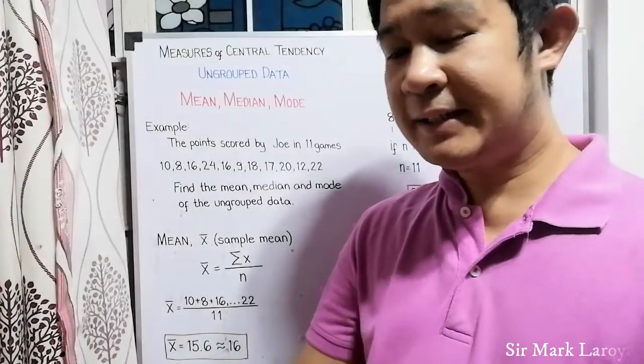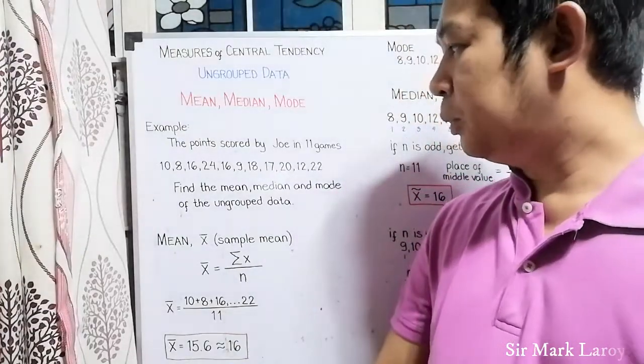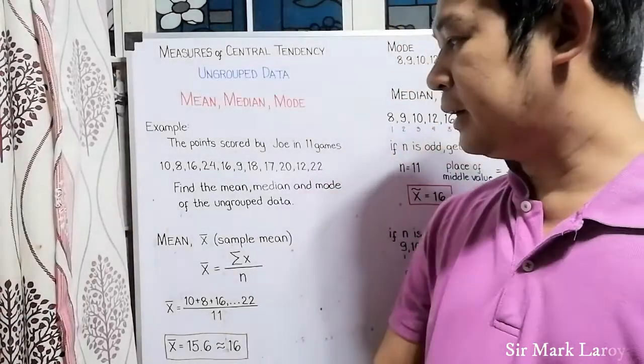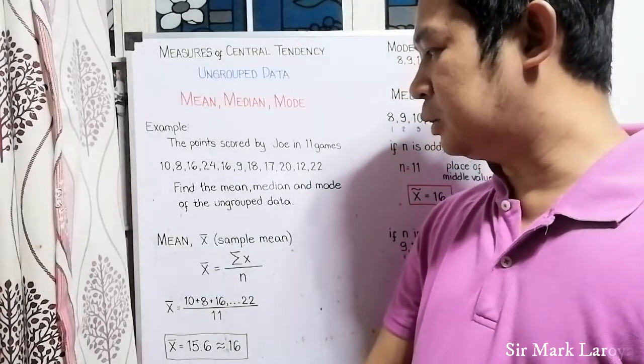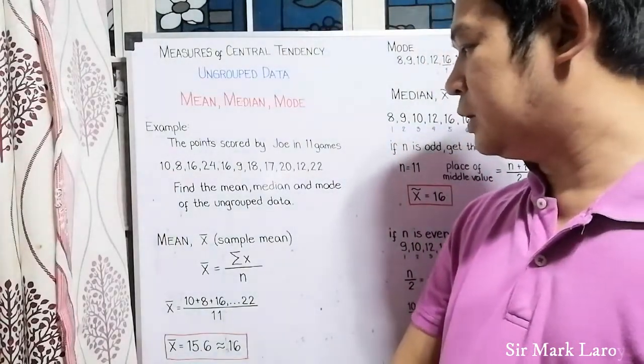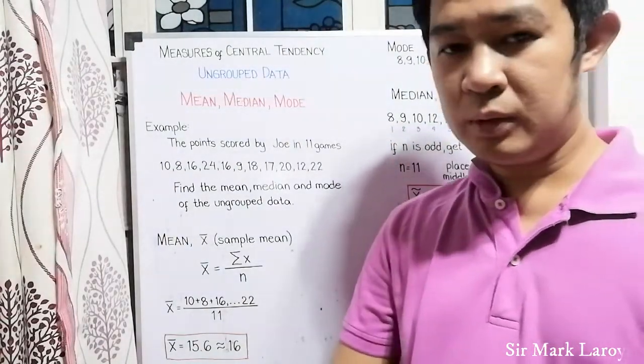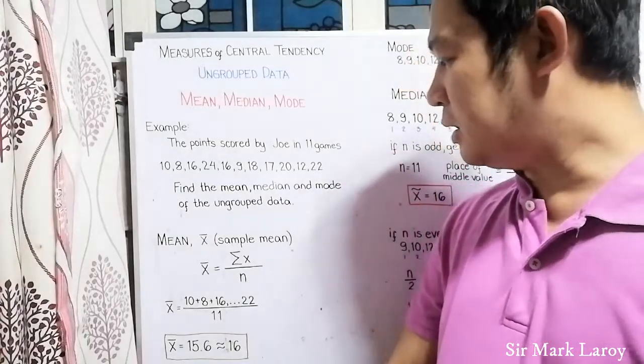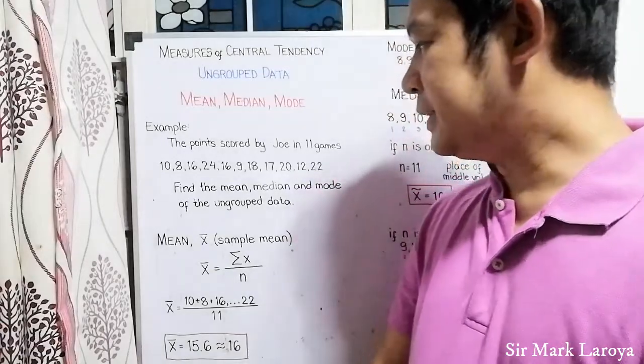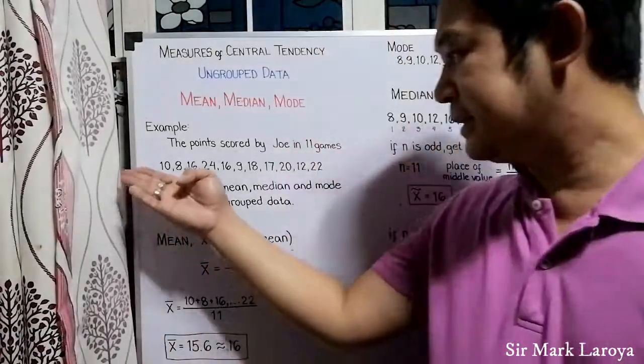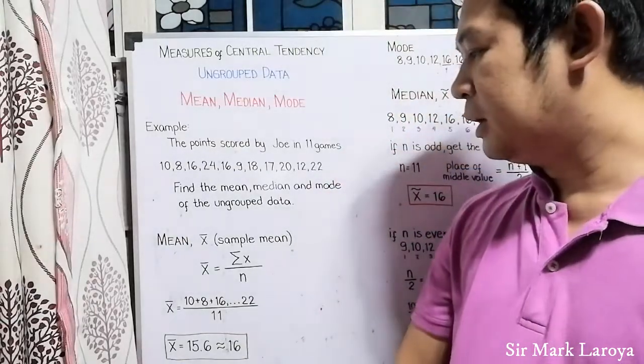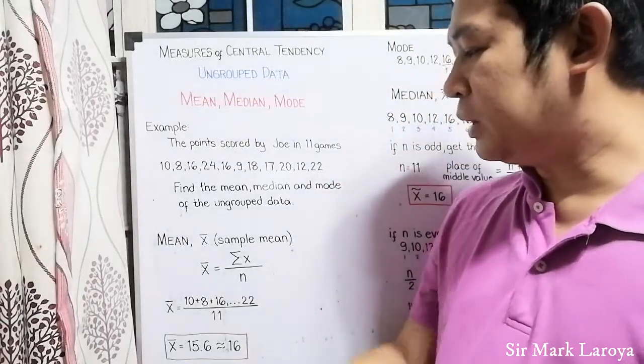Let us consider this example. The points scored by Joe in 11 games are 10, 8, 16, 24, 16, 9, 18, 17, 20, 12, and 22. Let us now find the mean, median, and mode of the ungrouped data. Our set of values are these points scored by Joe in 11 games. Now, let us proceed with mean.